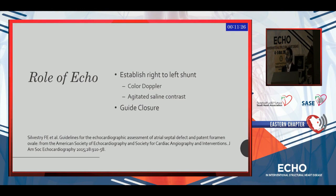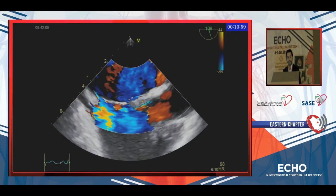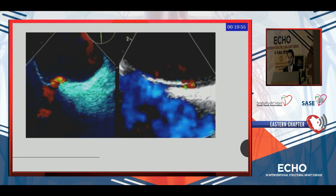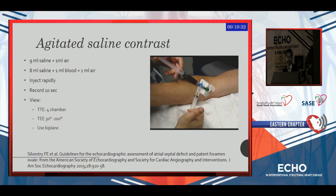So what's the role of echo? First, we need to establish the diagnosis of PFO by identifying right-to-left shunt, either by color Doppler or mainly agitated saline contrast, and also to guide closure. For transesophageal echo you have to sweep in 15-degree increments to confirm PFO presence, and your Doppler scale should be lowered below 40. You are mainly looking for a red signal representing right-to-left flow as a cause of stroke. However, if you have atrial septal aneurysm or a stretched PFO when the LA or RA is really dilated, you might have bidirectional or reversed flow.